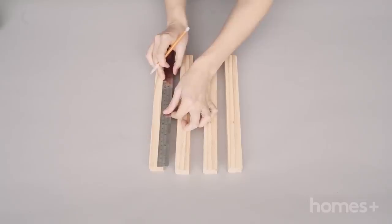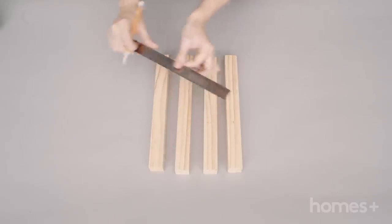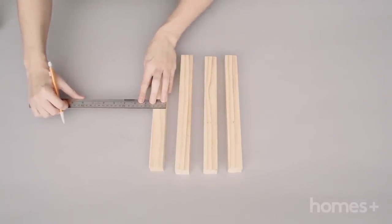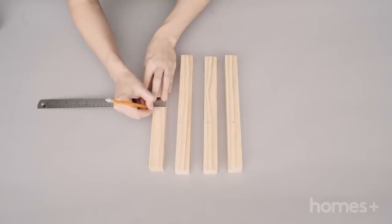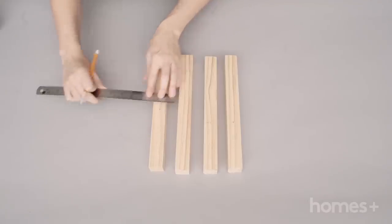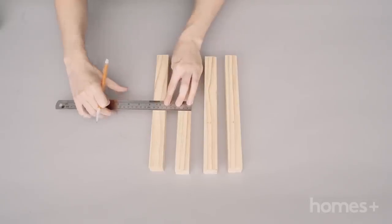On the two 18cm lengths of timber, measure and mark across at the halfway point, 9cm. And then on the ends of these two shorter lengths, measure and mark the center point.